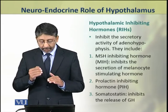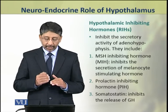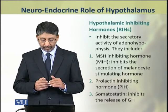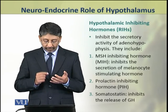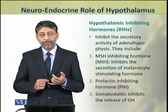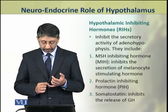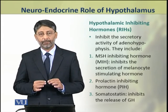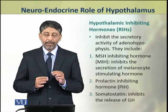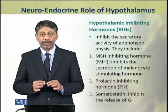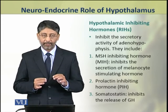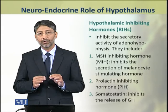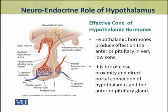There are three hypothalamic inhibiting hormones which inhibit the secretory activity of anterior pituitary. These include: number one, the MSH inhibiting hormone or MIH, that inhibits the secretion of melanocyte stimulating hormone. The second inhibiting hormone is the prolactin inhibiting hormone or PIH. And the third hormone is somatostatin, that inhibits the release of growth hormone.